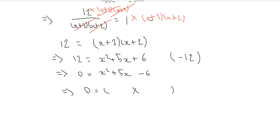What two numbers multiply together to make negative 6? We've got 1 and 6, or 2 and 3. Because of this plus 5x, one of these terms has to be positive and the other negative. So we go with x minus 1 and x plus 6: minus 1 times plus 6 equals minus 6, and minus x plus 6x is plus 5x. So our results are x equals 1 and x equals minus 6.